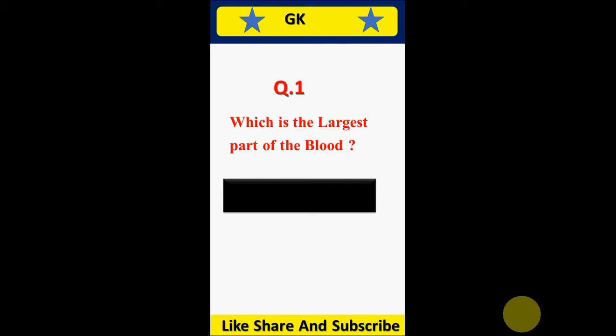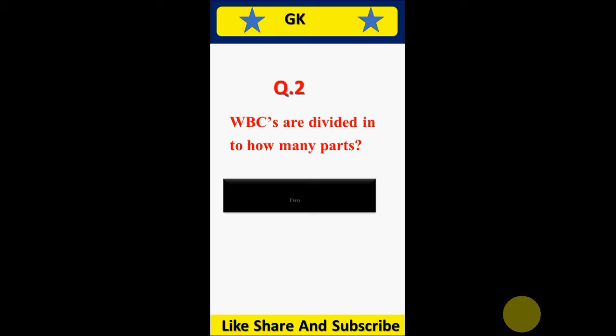Question number 1: Which is the largest part of the blood? Plasma. Question number 2: WBCs are divided into how many parts? 2.